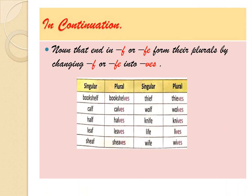Rule four: nouns that end in F or FE form their plurals by changing F or FE into VES. Words ending in F or FE change to plural by adding VES. Examples: bookshelf/bookshelves, calf/calves, half/halves, leaf/leaves, sheaf/sheaves, thief/thieves, wolf/wolves, knife/knives, life/lives, wife/wives.